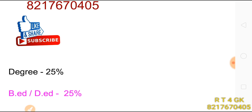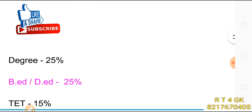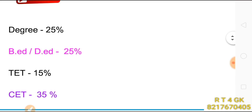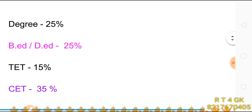Let's get into the business. For the degree percentage, it is 75%. BEDT is 25%, TET is 15%, and CET is 35%. We are going to calculate all of these components.